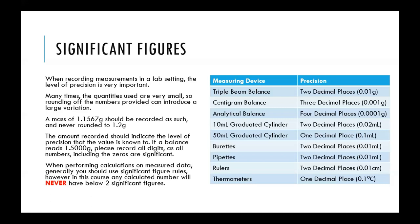A good rule of thumb for most lab settings when doing calculations is that two to three decimal places is a very good start. In the lab course, there will never be any value that has less than two significant figures.